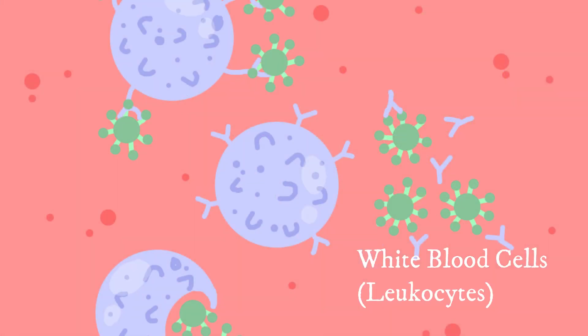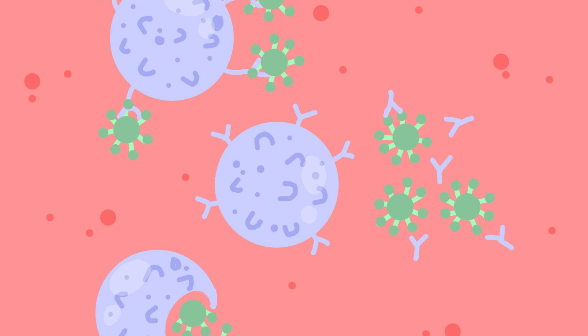White blood cells, also called leukocytes, are cells which protect the body from pathogens, along with a few organs and systems that make up the immune system.